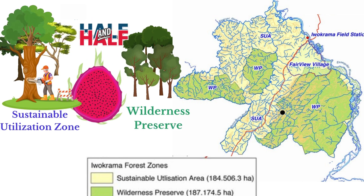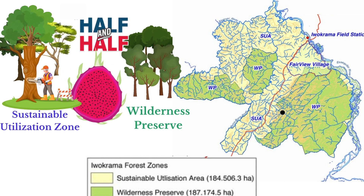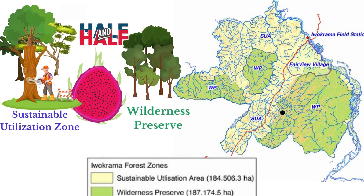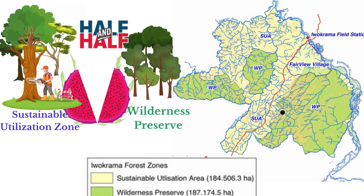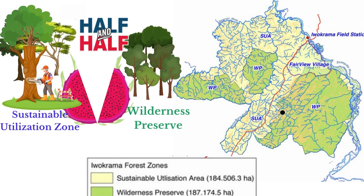The forest is divided into two spatially equal zones. Half of the forest is used as a wilderness preserve while the other half is a sustainable utilization area. The wilderness preserve is left untouched so that it can be regenerated, and helps to maintain a pool of genetic resources. It is also used as a reference to check on the level of human impact on the other half which is being used.